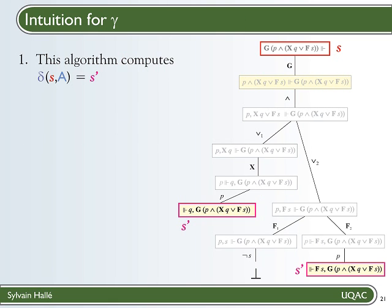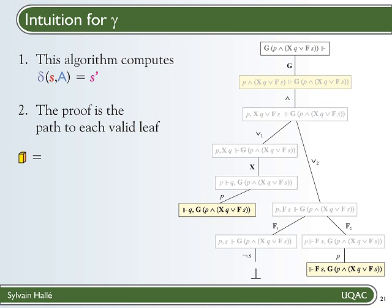But actually, we do more than compute the next state of the protocol, because the sequence of decompositions tell us how we conclude that from the start state and the current message, the resulting nodes are the next state. It follows that this algorithm can also be used to compute the proof we are looking for.